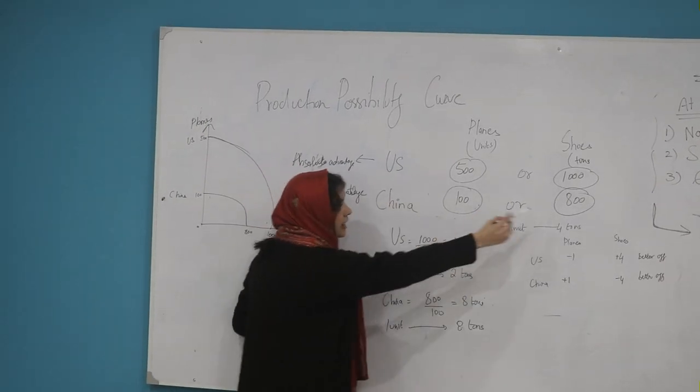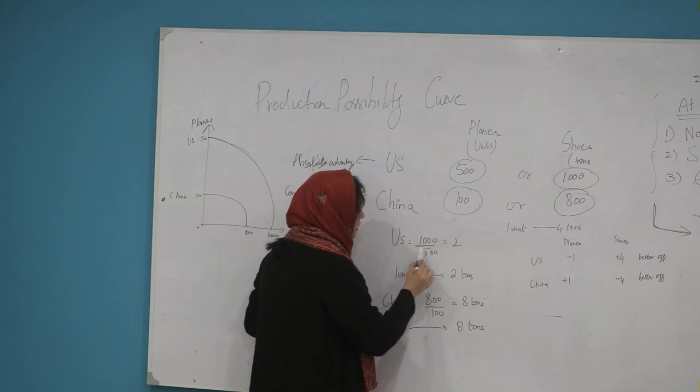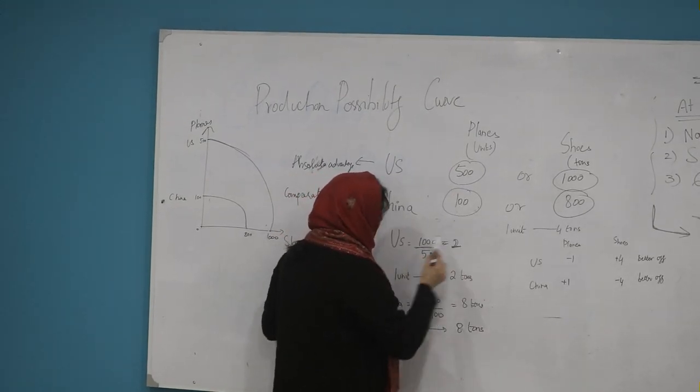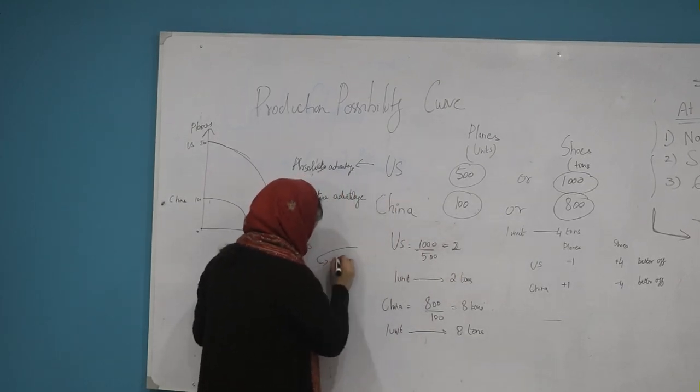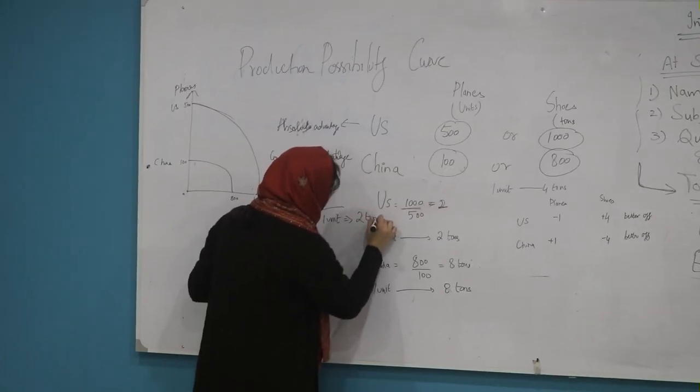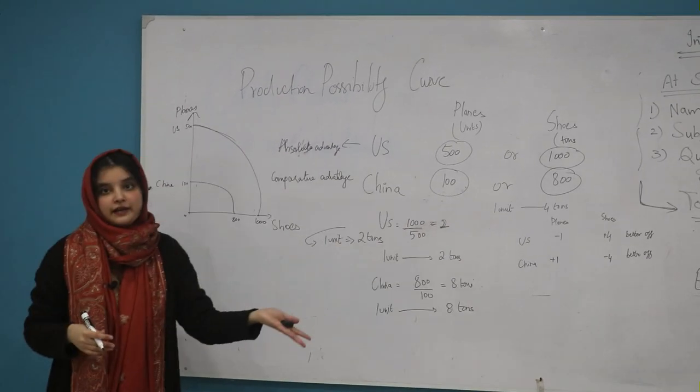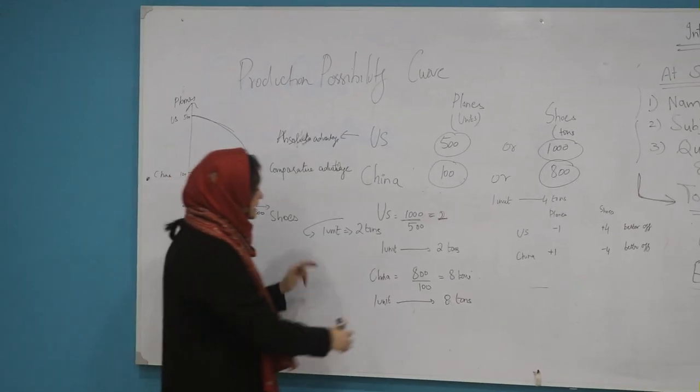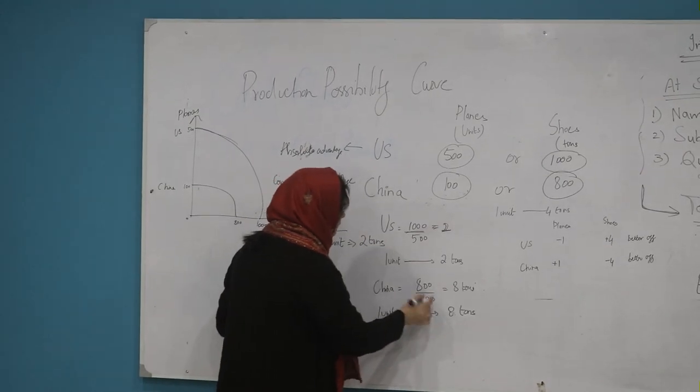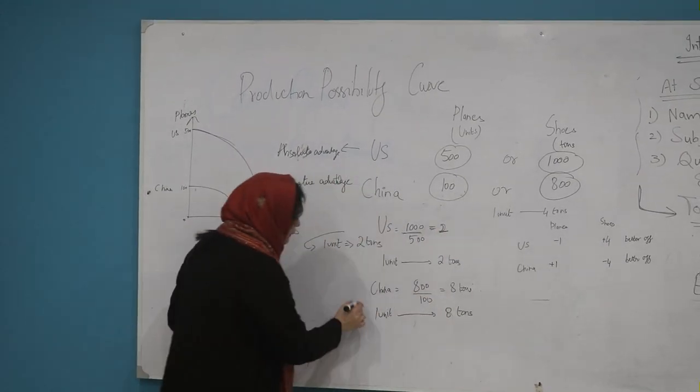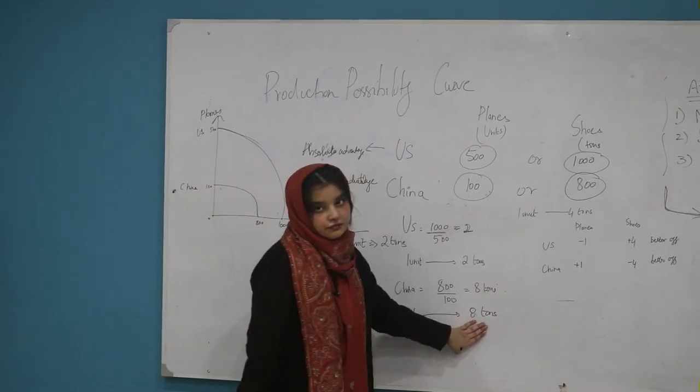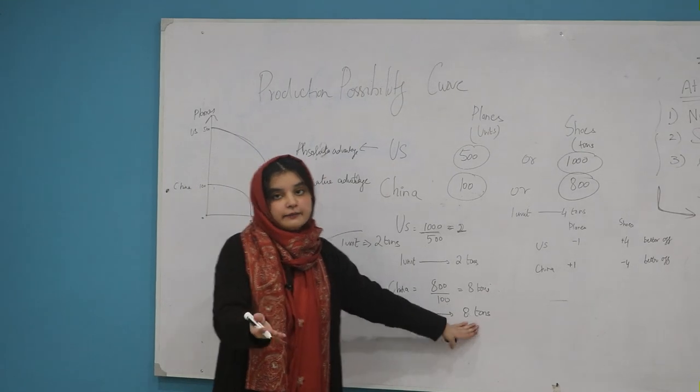So we will divide 1000 shoes by 500 planes, and we will know that the US will give up two tons of shoes for one unit of plane. This is the opportunity cost. And in this way, China will calculate the opportunity cost: 800 tons of shoes divided by 100 units of planes. So we will know that for one unit of plane, China will have to give up eight tons of shoes.